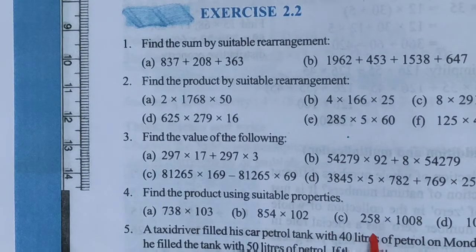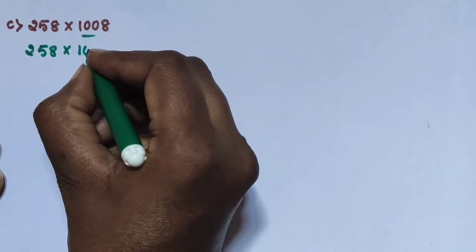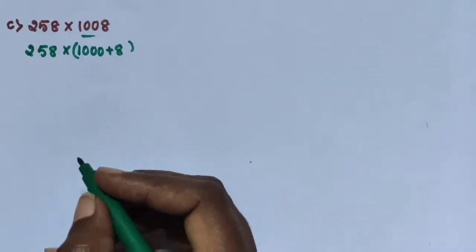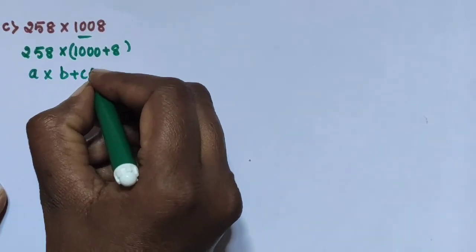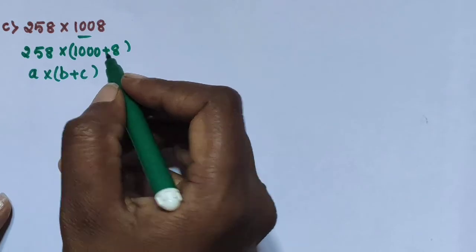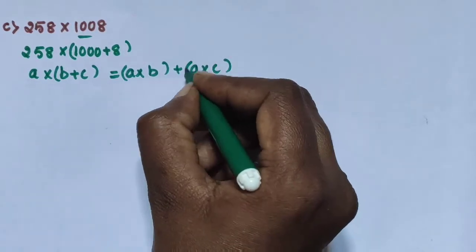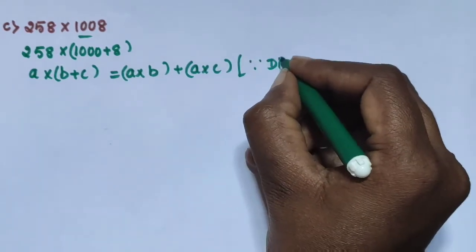Next sub-question C: 258 into 1008. This is also using the same process. 258 into 1008, where 1008 is split as 1000 plus 8. A into (B plus C), where A is 258, B is 1000, and C is 8. A into (B plus C) equals A into B plus A into C.